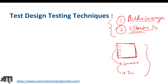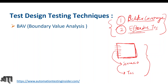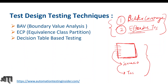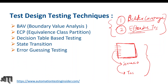These are the two important points, and because of them we go for test design testing techniques. Now let's talk about what testing techniques are available. We have: first, boundary value analysis; second, equivalence class partitioning; third, decision table testing; fourth, state transition; and fifth, error guessing testing. These are the five types of test design testing techniques.